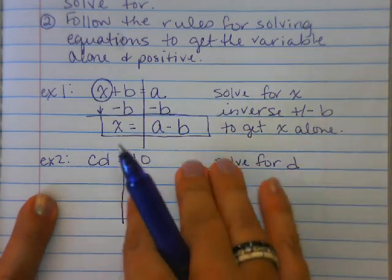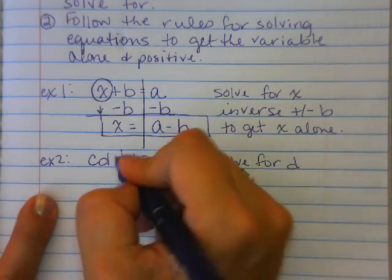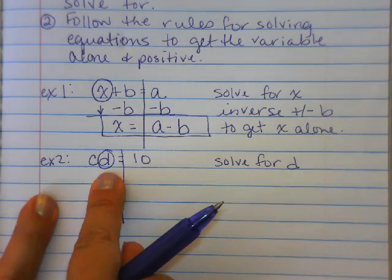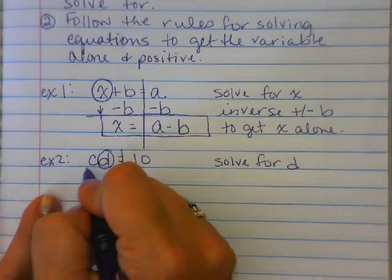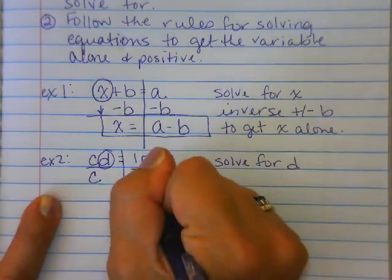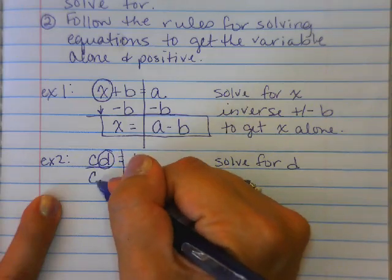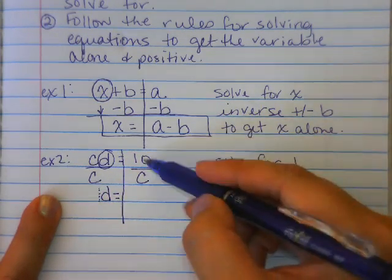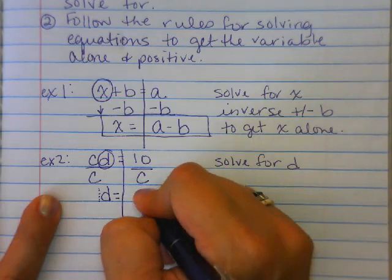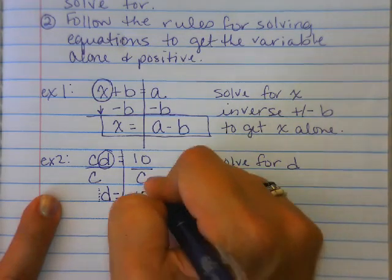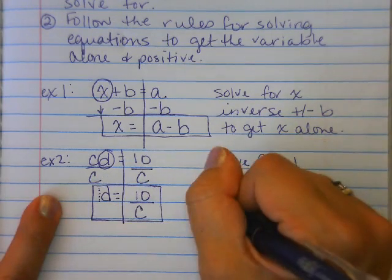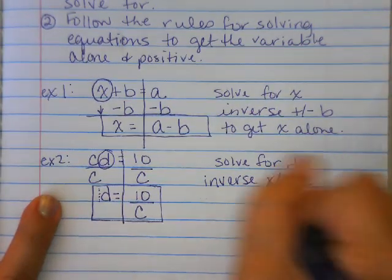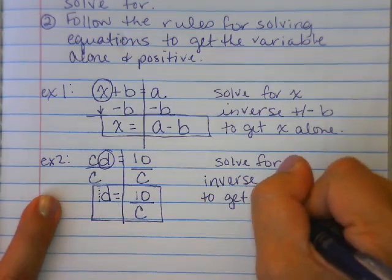No inverse add subtract because this is multiplying. We're multiplying. So step five is inverse multiply divide. So I'm multiplying d by c, so the inverse of multiplying by c is to divide by c. And remember, c divided by c, anything divided by itself is 1. So technically, I have 1d is equal to, I cannot divide 10 by c because I don't know what c is. So we're just going to say d is equal to 10 over c. So again, what did we do? We did the inverse multiply divide by c to get, in this case, d alone.